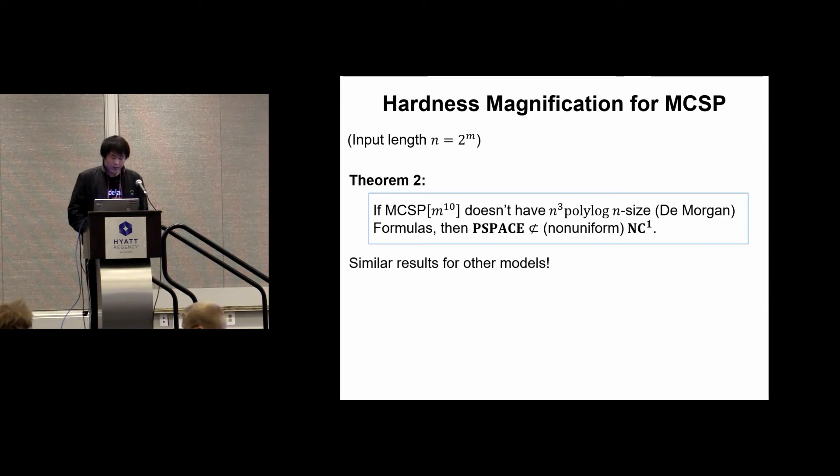Using our techniques, we could also prove some new hardness magnification theorems for MCSP. For example, if MCSP n^10 doesn't have n^3 times polylog(n) size De Morgan formulas, then NP is not in NC1. We also have similar results for other models.